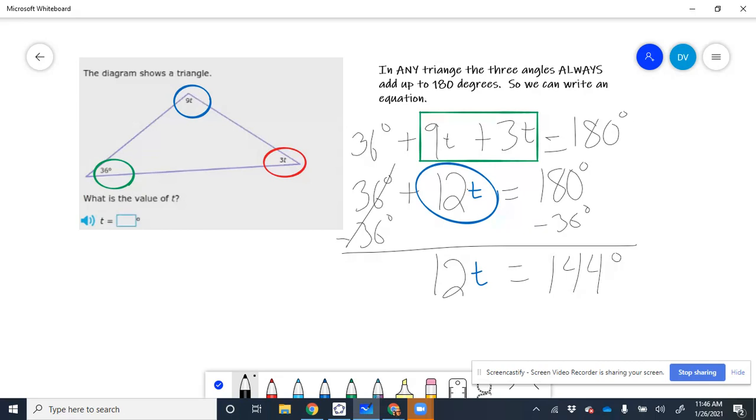And now we just need to do the opposite of what they did, the inverse of what they did. They multiplied by 12. 12 times T means T times 12. They multiplied T times 12. We want to divide not just the T, but both sides by 12.